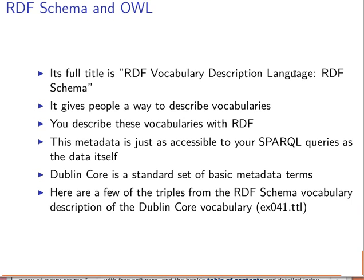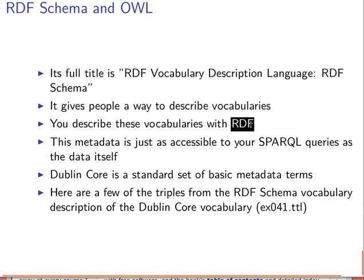RDF Schema is actually the RDF Vocabulary Description Language — it is a description language for vocabularies. It gives people a way to describe vocabularies using RDF, using the idea of triples. Because it describes vocabularies, we have data about data: our vocabulary is data, a set of terms, and then we describe that vocabulary — so we have data about data, i.e., metadata.